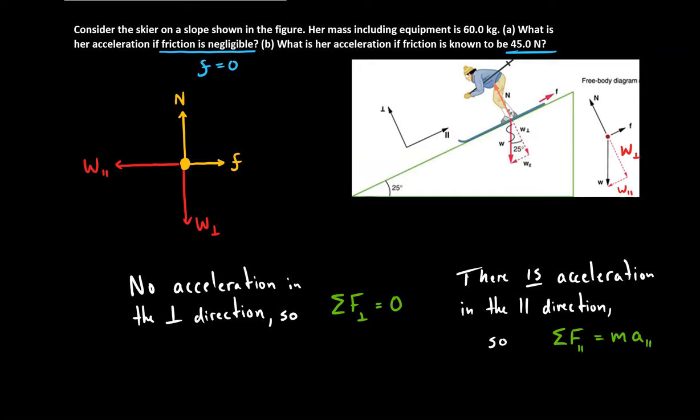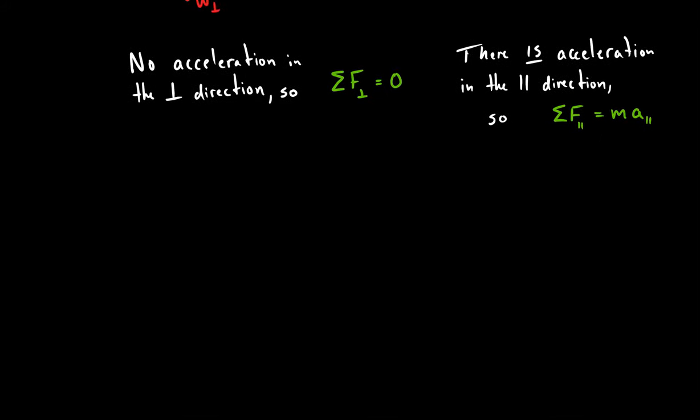Okay, so to set up part A, let's scroll down a little bit. Part A, if I can find it. There it is. Okay, we're looking at forces in the parallel direction since that's where the acceleration is happening. So sum of forces is equal to mass times acceleration in the parallel direction. And then we can rearrange that to solve for acceleration.